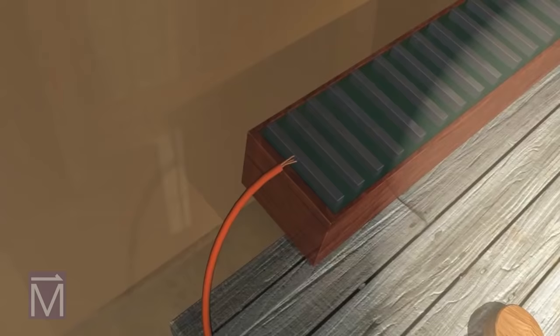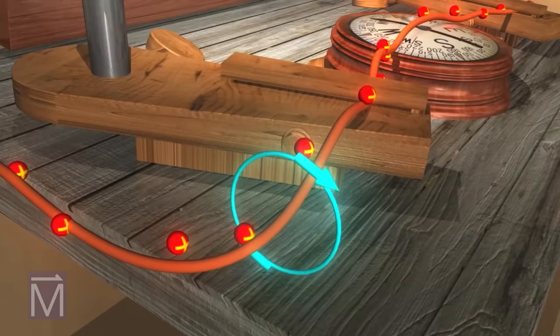As it turns out, an electric current made up of moving charged particles produces a magnetic field that circles around the moving current, as shown by these blue lines.